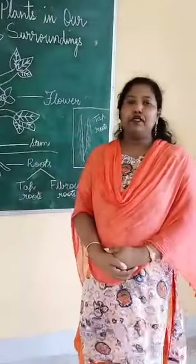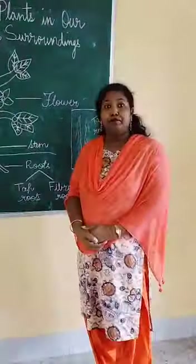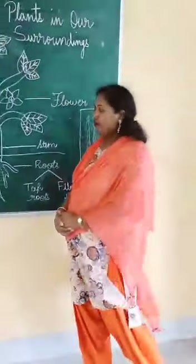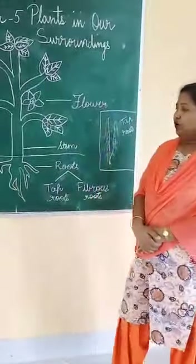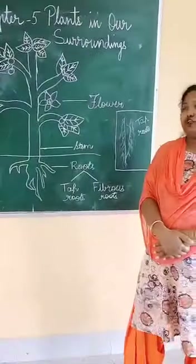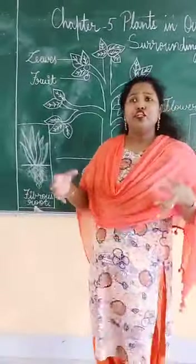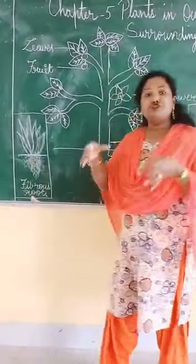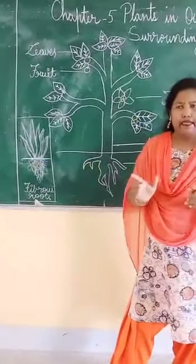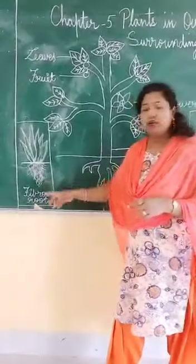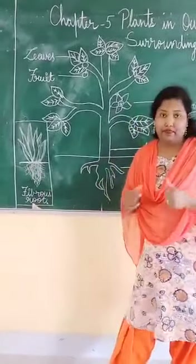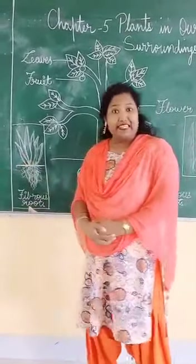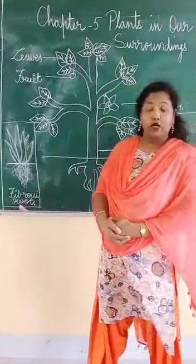An example of tap root is mango tree, peepal tree, and neem tree. Now we have fibrous root. In fibrous root, we have several thin hairs growing together. These are the fibrous roots which grow together. The examples of fibrous roots are grass, paddy, wheat, and maize.